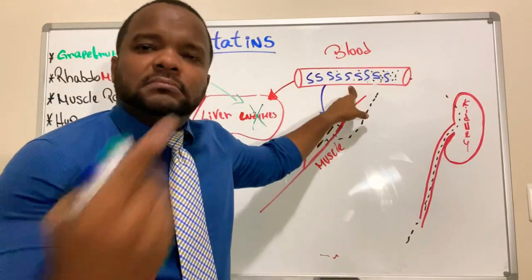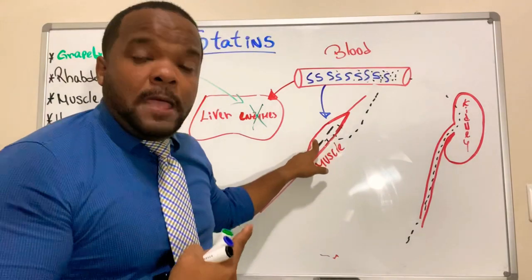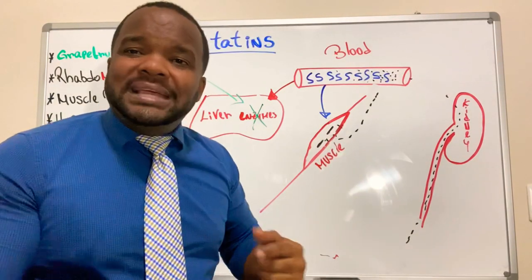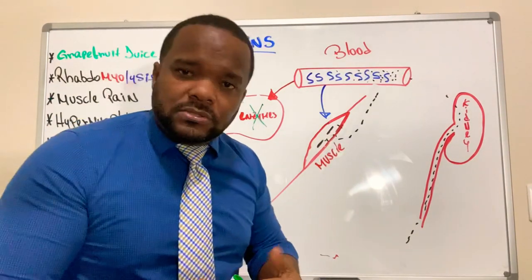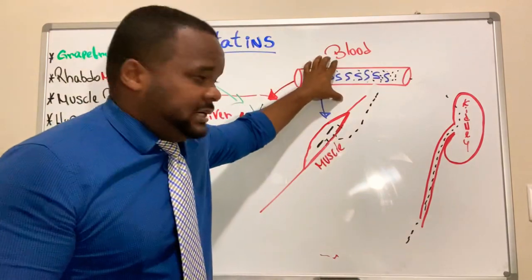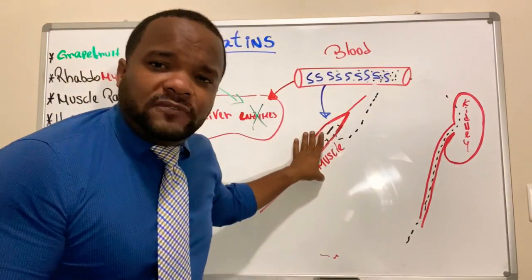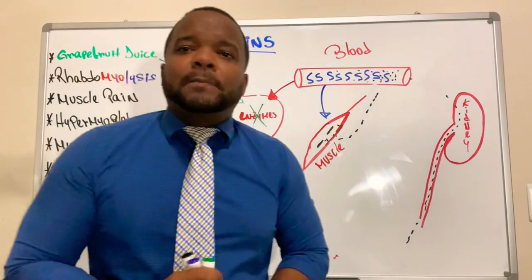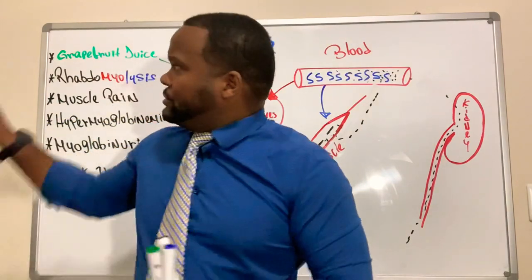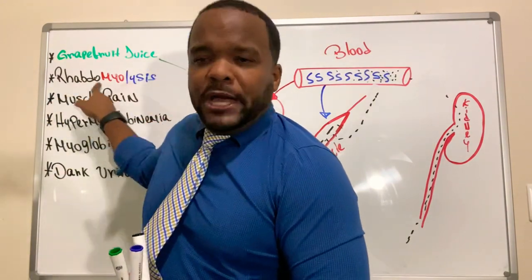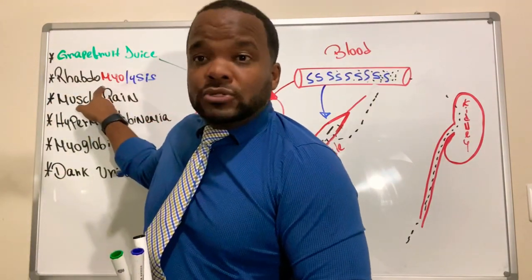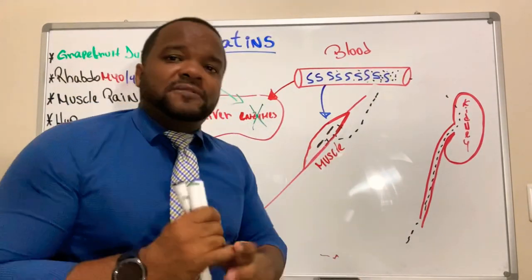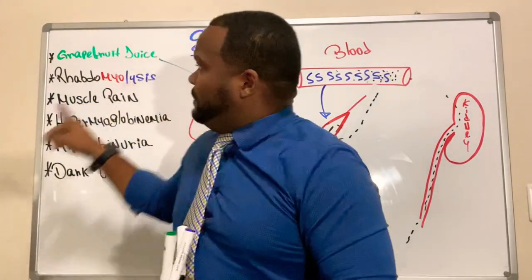With statins increasing in the blood, they reach the muscle fibers. Muscle fibers contain myoglobin, which is a protein inside the muscles. If the statin is elevated in the blood, these muscle fibers will be destroyed — that's what we call rhabdomyolysis. 'Rhabdo' means muscle and 'lysis' means rupture.